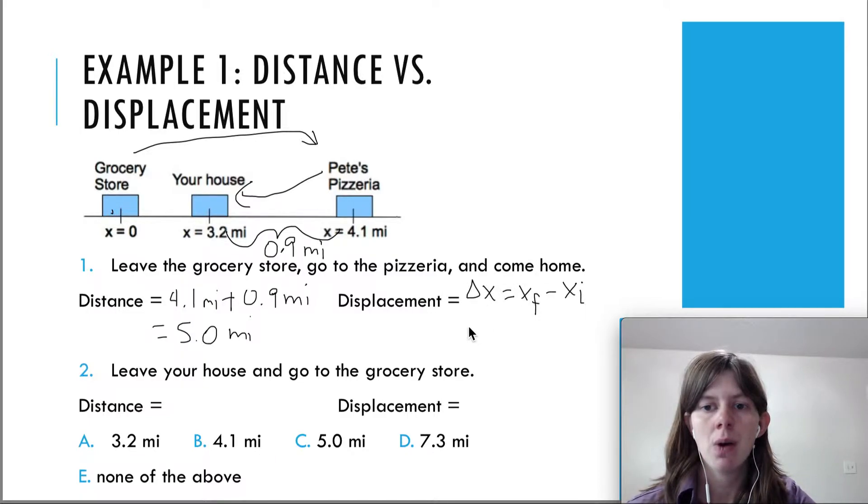So the final position is 3.2, but the initial is 0. So it doesn't matter that you did a detour here to go to the pizzeria. For the displacement, you just went from the grocery store and then to your house.